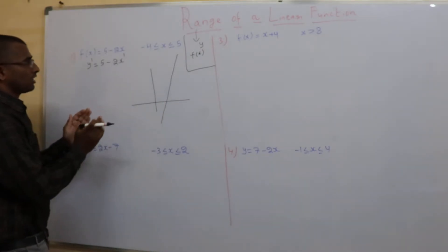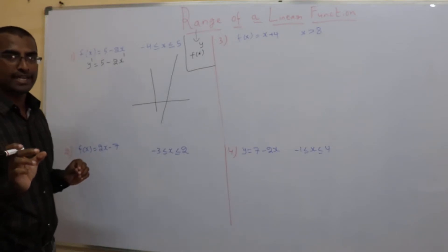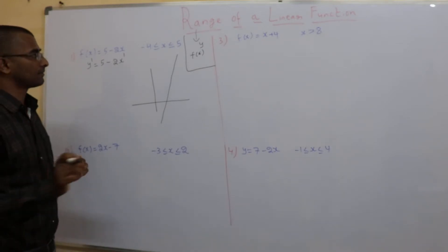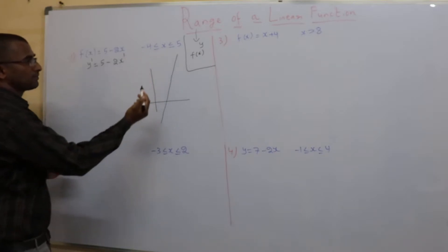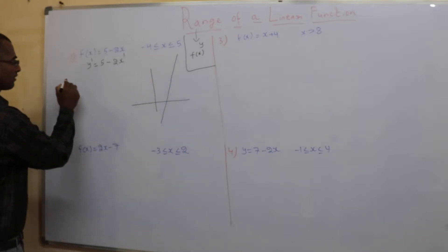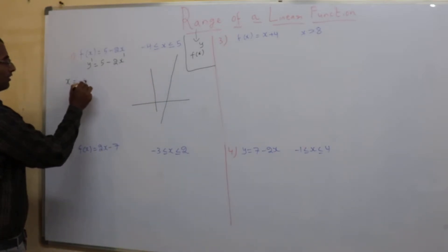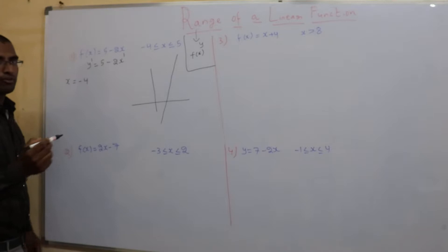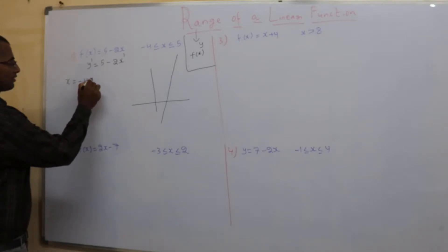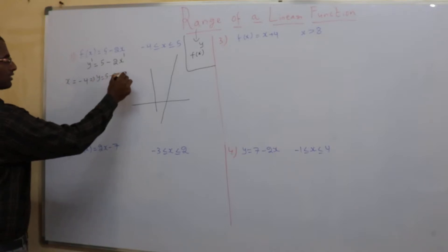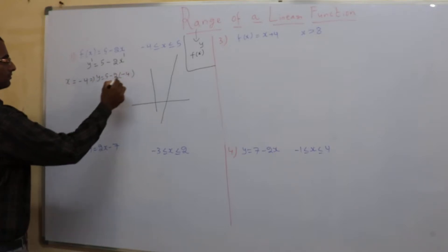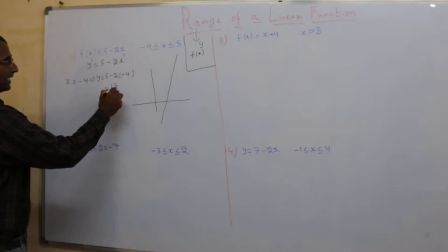So between which two values do I need to find the values for y? I need to find between these two. When x is minus 4, what will be the value for y? Replace x with minus 4: y = 5 minus 2 times minus 4, so 5 plus 8 gives 13.